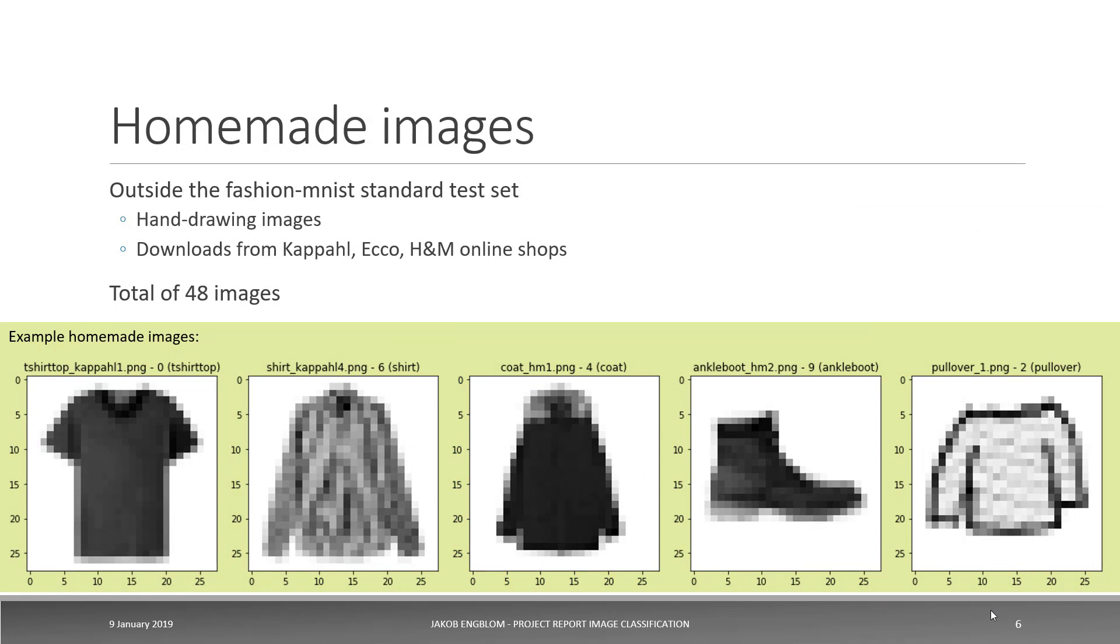My homemade image set was achieved in two ways. I did some handmade drawings of clothes to see if that would work. And I also downloaded nicely curated images from several other retailer websites, because it makes sense that if I take a picture of some kind of article of clothing from a retailer, the Zalando dataset should be able to match up to that. This ended up with a total of 48 images, which is enough to illustrate the concept, but it's not in any way, shape or form a statistically significant sample for how well this would fare on any image.